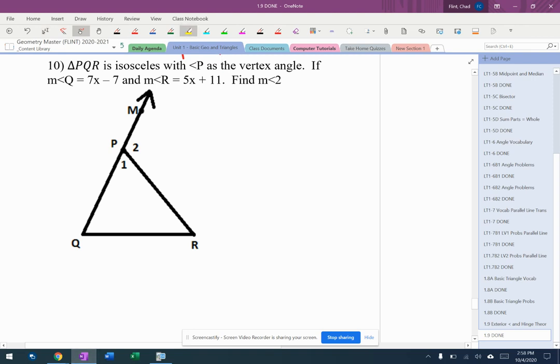All right, so we got isosceles triangle again. I got Q, which is right here, and I got R, which is right here, and it says P is a vertex angle, find angle 2.